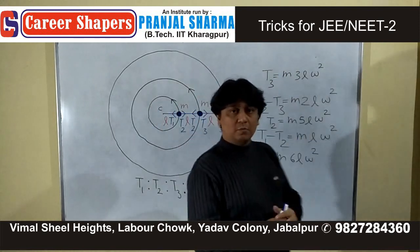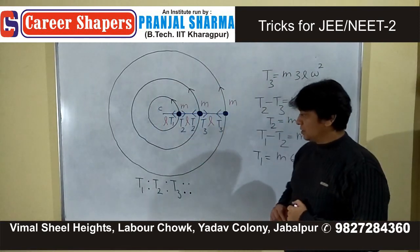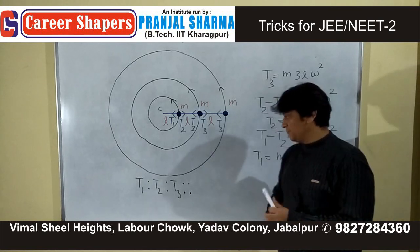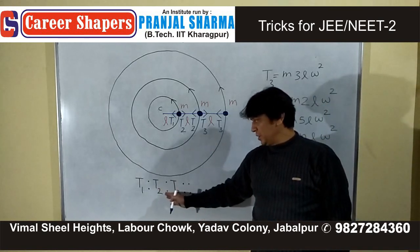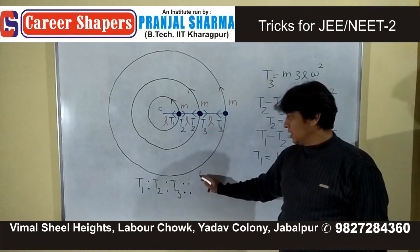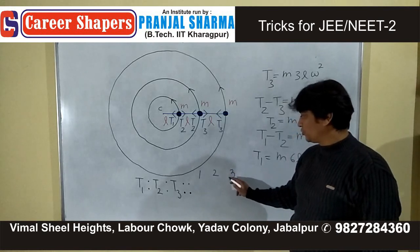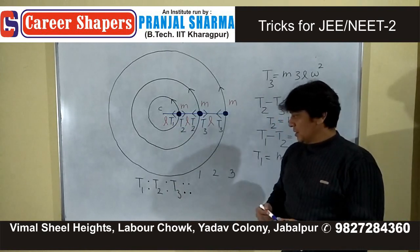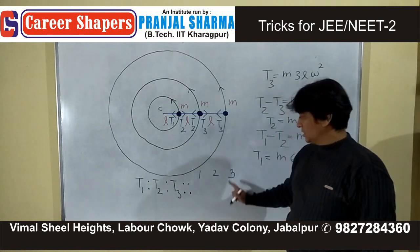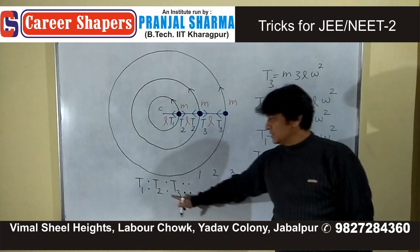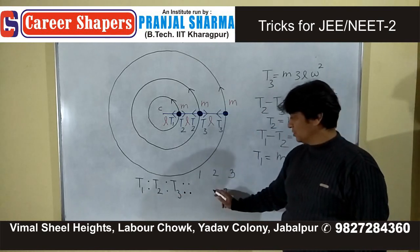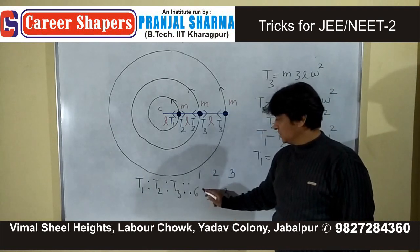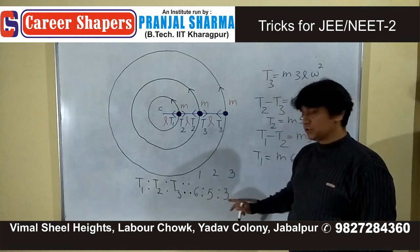Now look at the one-line method you can use in any competitive examination. To find T1 : T2 : T3, write down 1, 2, 3. Starting from the last: the third value is 3, the second is 3 plus 2 equals 5, and the first is 3 plus 2 plus 1 equals 6. That's all — the answer is 6 : 5 : 3.